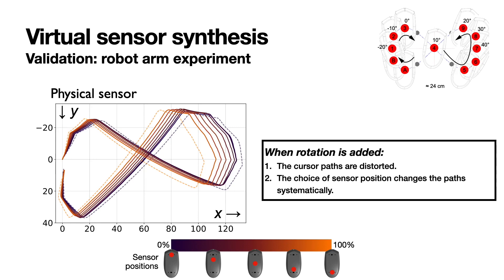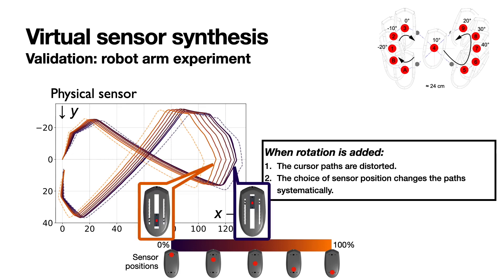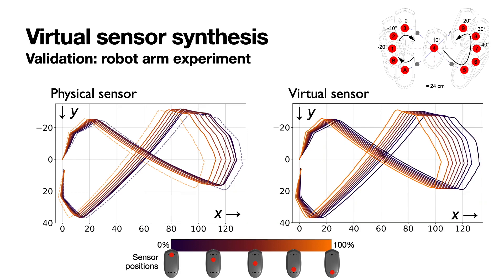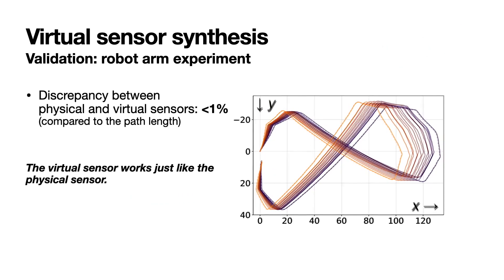When rotation is added to the movement, we can notice the rotation is distorting the path, and the choice of sensor position systematically changes the path. The orange one is drawn from the rear sensor, and the blue one is drawn from the front sensor. We can notice the front sensor is drawing the wider path. We confirmed the virtual sensor is also drawing the same path, and the discrepancy between physical and virtual sensor is less than 1%. With the robot arm experiment, we conclude the virtual sensor works just like the physical sensor. So we only use the virtual sensor for the following experiments.